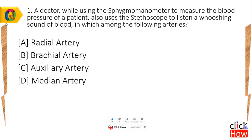Question 1: A doctor, while using the sphygmomanometer to measure the blood pressure of a patient, also uses the stethoscope to listen to a whooshing sound of blood in which among the following arteries? A) Radial artery, B) Brachial artery, C) Auxiliary artery, D) Median artery. You have 5 seconds to answer.